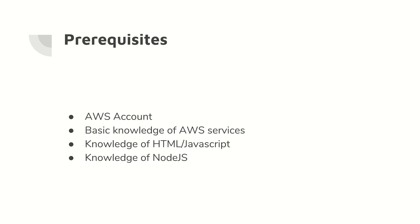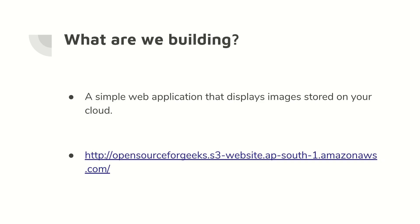Now let's look at the prerequisites required to follow this video series. First, you need an AWS account — a free tier account is fine. Second, you need some basic knowledge of AWS services, including IAM roles, which are required for services to work. Third, you need some knowledge of HTML and JavaScript, as that's how we'll write the UI of our web app. Finally, you need some knowledge of Node.js, as that's how we'll write our AWS Lambdas.